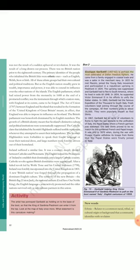Giuseppe Garibaldi (1807–82) is perhaps the most celebrated of Italian freedom fighters. He came from a family engaged in coastal trade and was a sailor in the merchant navy. In 1833 he met Mazzini, joined the Young Italy movement and participated in a Republican uprising in Piedmont in 1834. The uprising was suppressed and Garibaldi had to flee to South America, where he lived in exile till 1848. In 1854, he supported Victor Emmanuel II in his efforts to unify the Italian states. In 1860, Garibaldi led the famous expedition of the thousand to South Italy. Fresh volunteers kept joining through the course of the campaign, till their numbers grew to about 30,000. They were popularly known as red shirts. In 1867, Garibaldi led an army of volunteers to Rome to fight the last obstacle to the unification of Italy, the Papal States where a French garrison was stationed. The red shirts proved to be no match for the combined French and Papal troops. It was only in 1870, when during the war with Prussia France withdrew its troops from Rome, that the Papal States were finally joined to Italy.